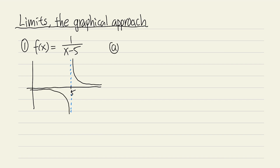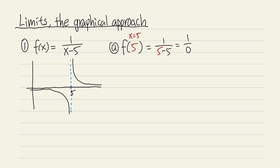Now let's focus on the first question: what is f of 5? This notation means x is exactly equal to 5, so you plug that in and get 1 over 5 minus 5, which is 1 over 0. That's just regular math — 1 divided by 0 doesn't have an answer, so in this case we say it is undefined. Whenever you see a zero on the bottom in a computation, it's just undefined.